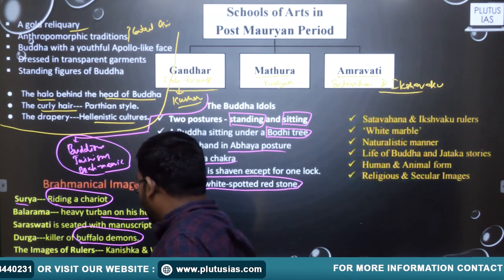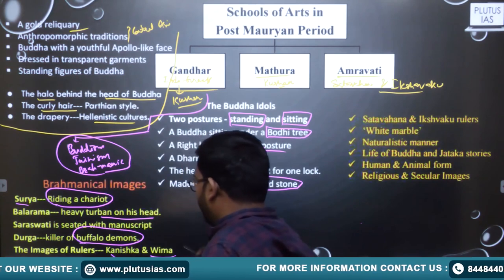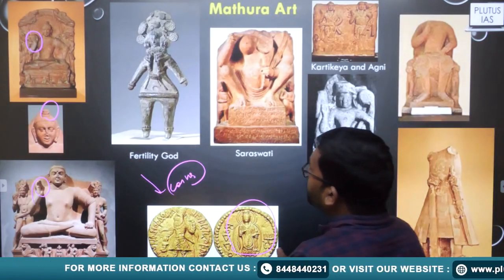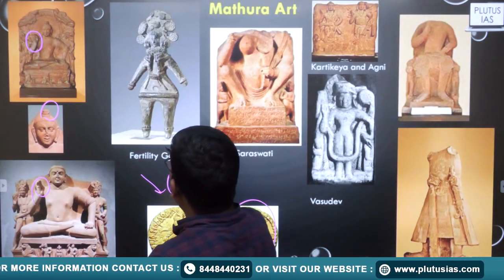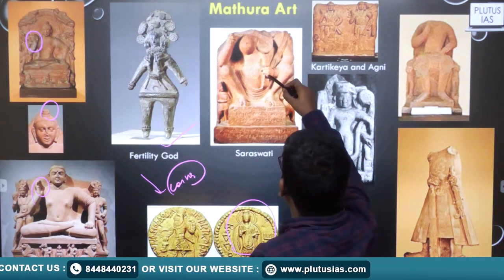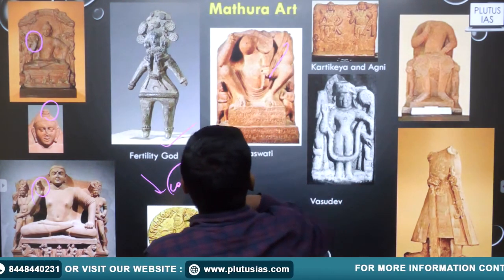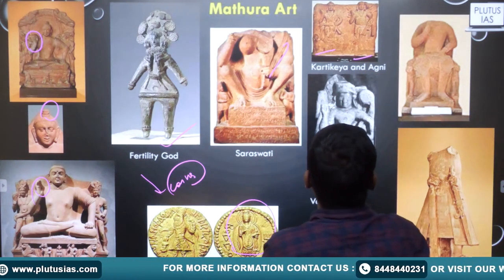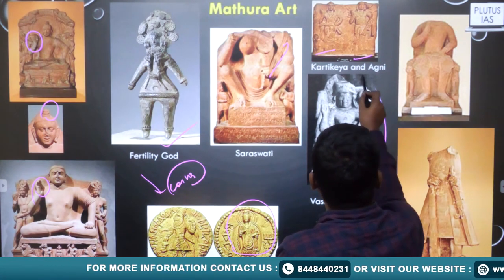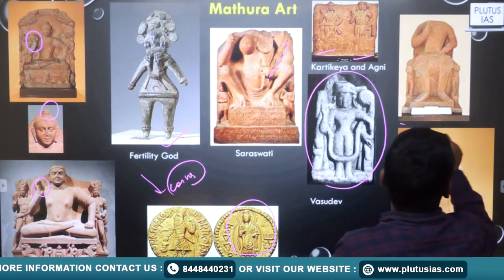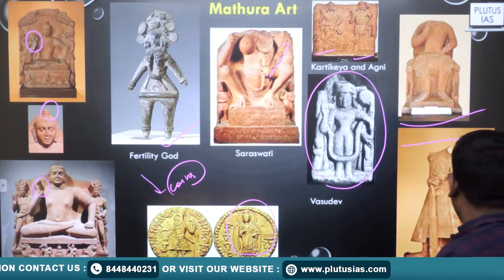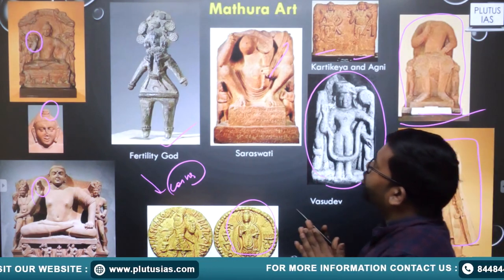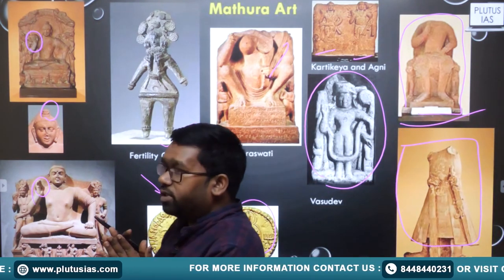We have also found images of some rulers like Kanishka and Vima. These are the Brahmanical images from Mathura — a God of fertility, Saraswati playing with a manuscript, Kartikeya, Agni, Vasudeva, and a headless statue of Kanishka. These are the images of the post-Mauryan period, especially of Mathura art.